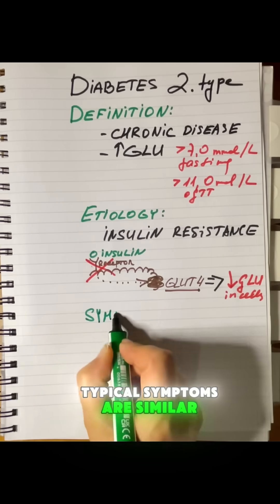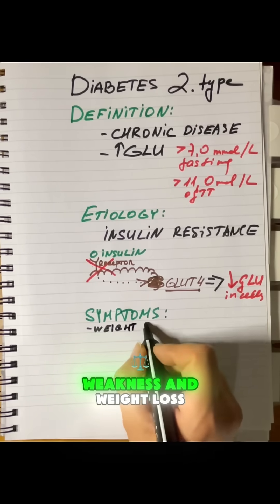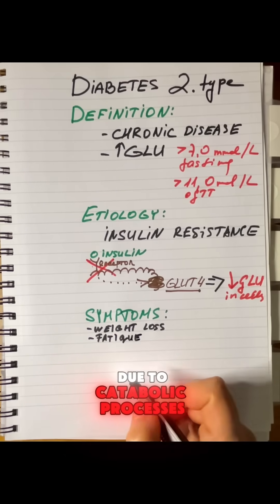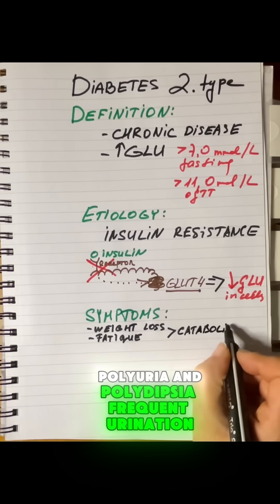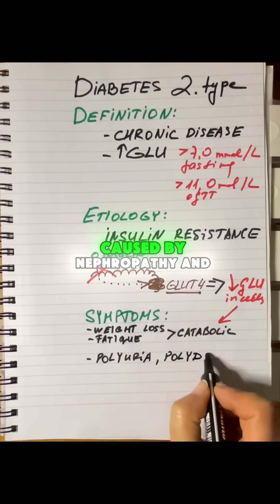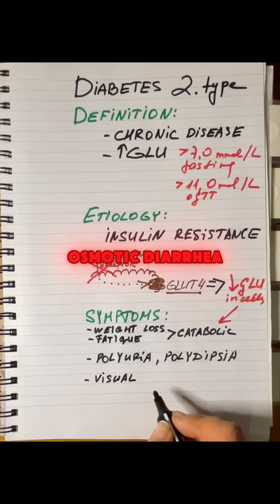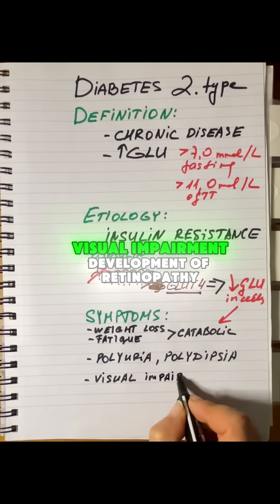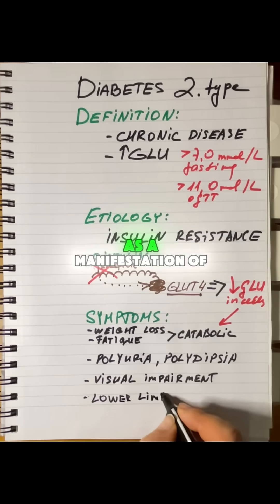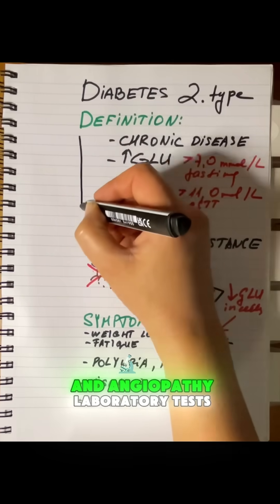Typical symptoms, similar to those in type 1 diabetes, include weakness and weight loss due to catabolic processes, polyuria and polydipsia — frequent urination and thirst caused by nephropathy and osmotic diuresis — visual impairment, development of retinopathy, and lower limb ulcers as a manifestation of advanced neuropathy and angiopathy.